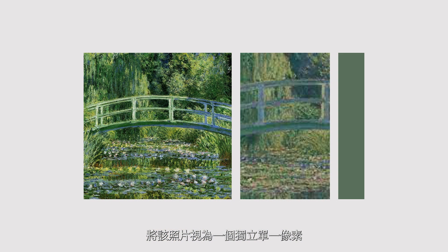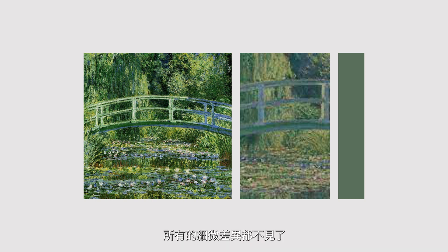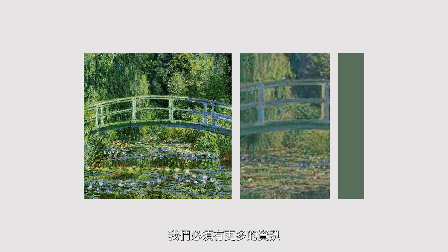It's sort of like a low-res photo of a painting and trying to turn it into a single pixel — try describing that painting based on that single pixel. It's pretty difficult, right? All those subtle colors, the shading, the texture, all that nuance get lost. To give a complete sense of the picture, we must have a more complete sense of the information of that coffee.